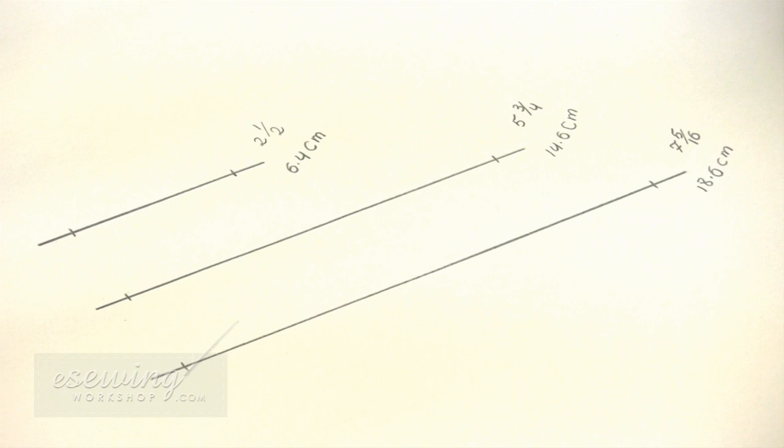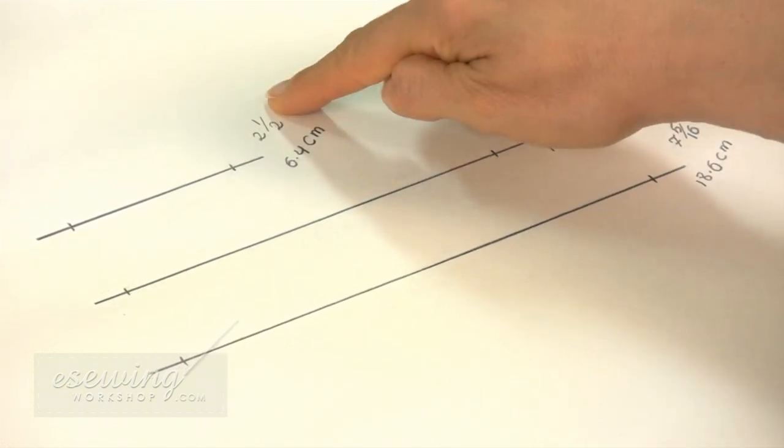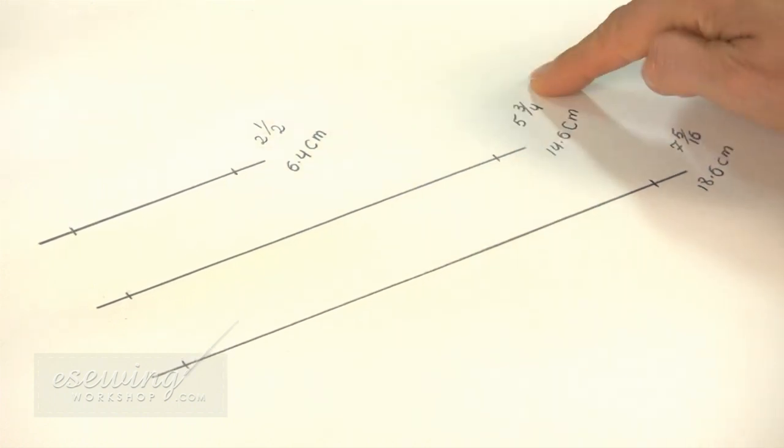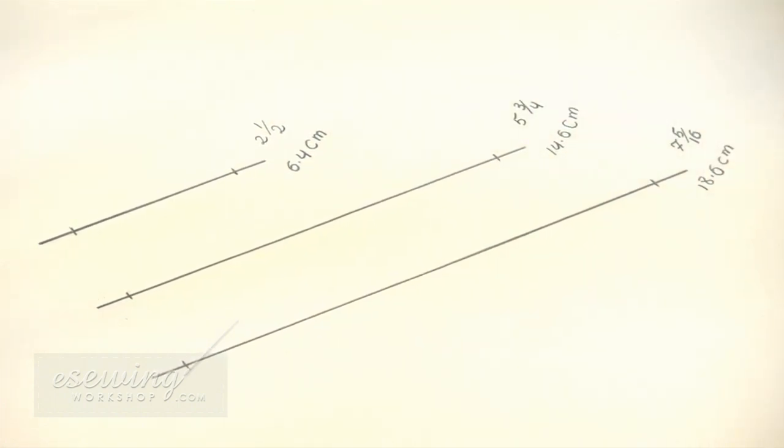If we need to add these numbers in inches we would have to be comfortable adding fractions. However to add the measurements in the metric system we can use a calculator and add the numbers easily. To add these measurements we need to add 2 and a half inches to 5 and 3 quarters and 7 and 5 sixteenths.